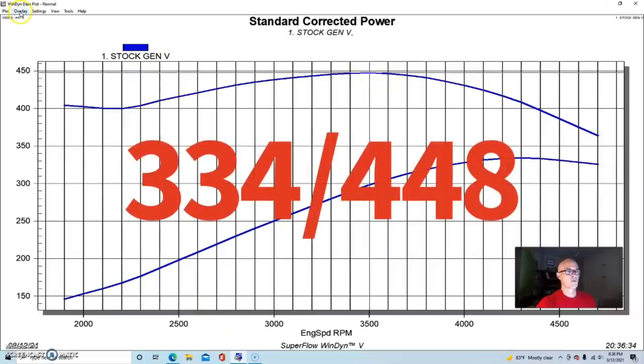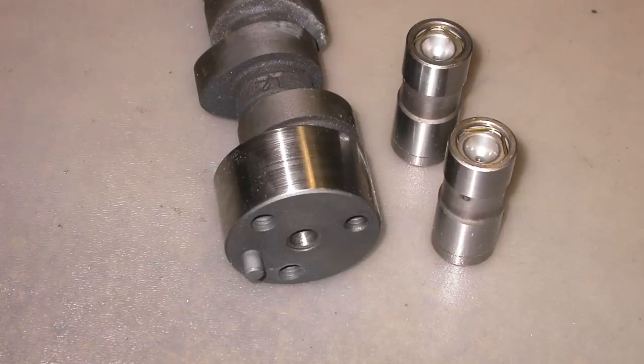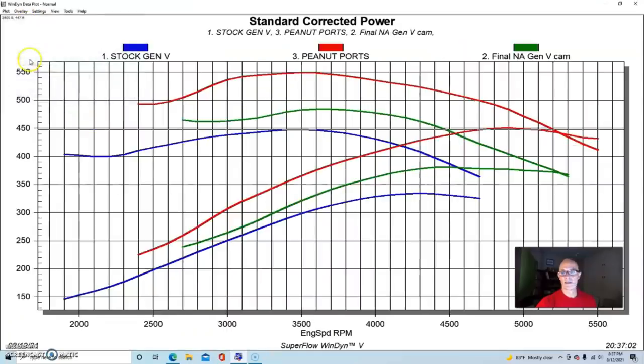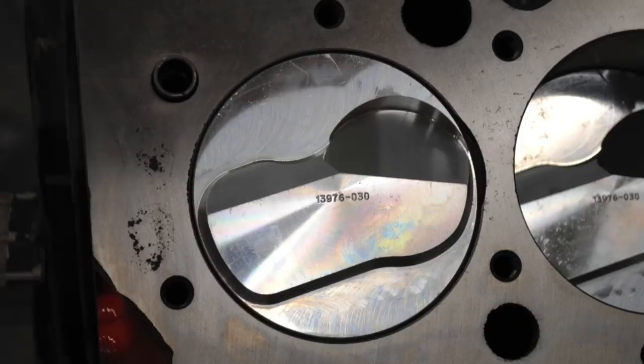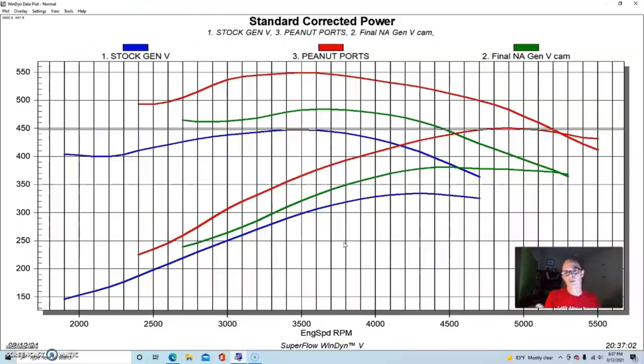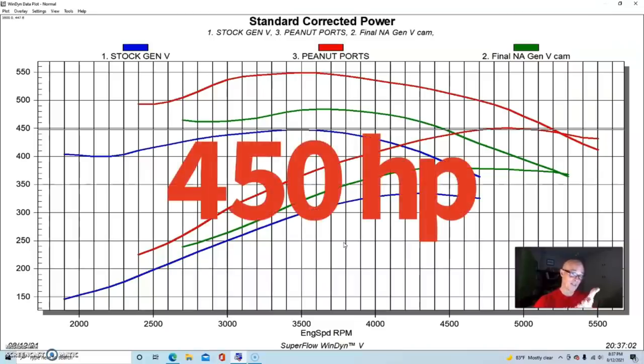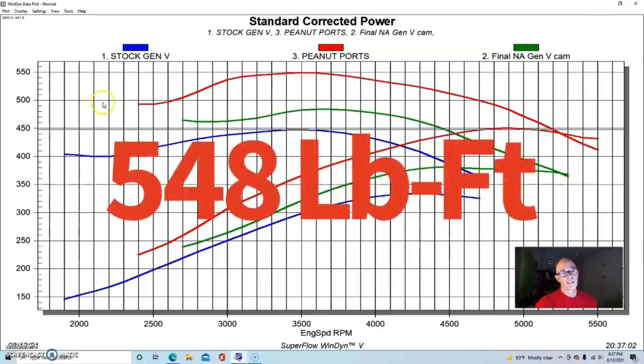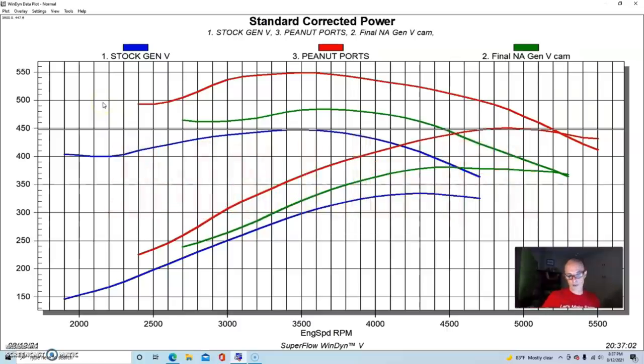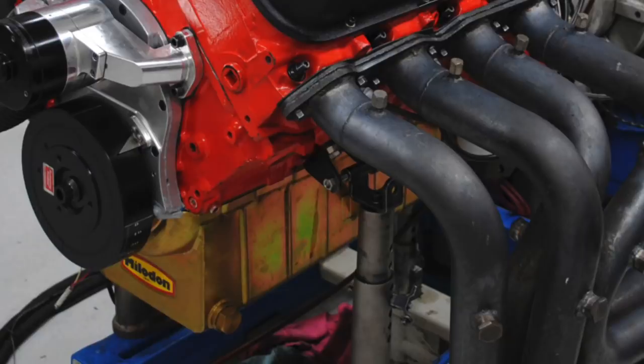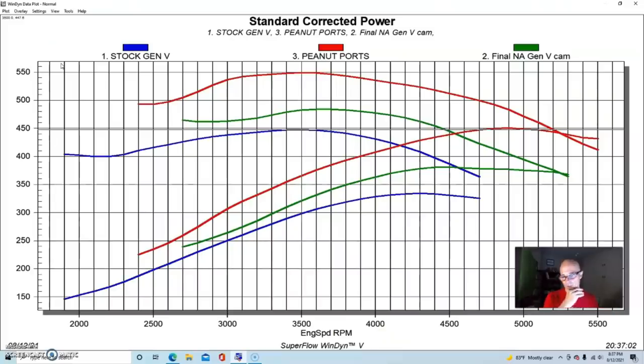Once again we have our stock gen 5 454 with the peanut port heads making 334 horsepower, 448 foot pounds. To that we added a camshaft, then we added a modified motor with good pistons, good rods, bored 30 over, more compression because we had 18 to 20cc dome pistons in it, and then put a bigger camshaft in it, the Extreme Energy 268 cam. Then we were up at 450 horsepower and nearly 550 foot pounds of torque. To push this thing up over 500 horsepower, we retained the same short block but made a few changes to it. We put a little bit better oil pan assembly on it, this was more of a boat pan with a deep sump and kick out with an integrated windage tray in the pan.